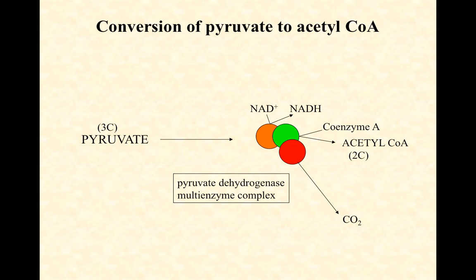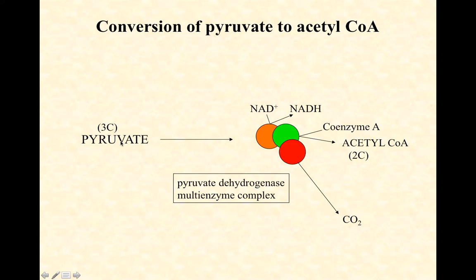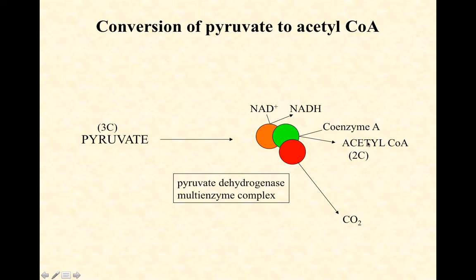Three things happen in this whole process. One of the three carbons of pyruvate gets broken off and released as a CO2 molecule — this enzyme is called a decarboxylase. Now we've got two carbons left. Our remaining two carbons are called acetate, or acetyl when they're attached to something else. The next enzyme takes our remaining acetate and covalently but temporarily binds it to a molecule called coenzyme A, producing acetyl-coenzyme A, which we'll refer to as acetyl-CoA.